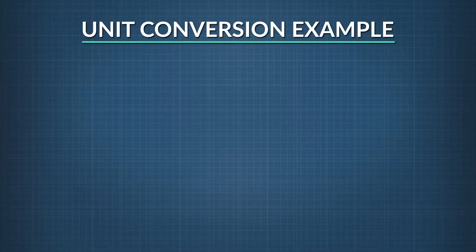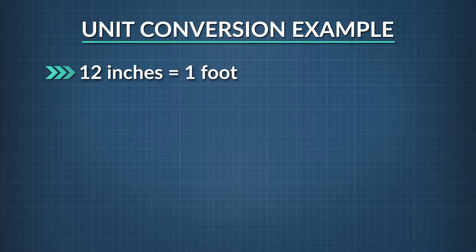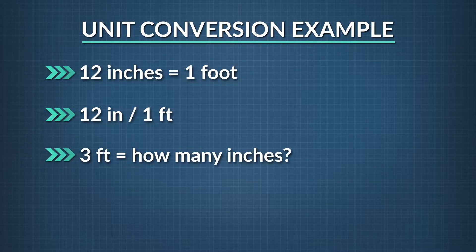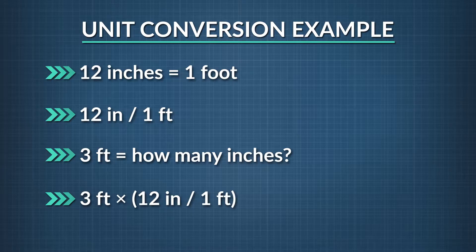Here's how that works. Let's look at converting from imperial to imperial first. We know that 12 inches equals 1 foot. We can represent this as 12 inches over 1 foot — this is our conversion factor, and we can use that to convert a number in feet to inches. How many inches are in 3 feet? We start by writing down 3 feet and multiplying it by our conversion factor, 12 inches over 1 foot. Our feet units cancel, leaving us with our answer: 36 inches.